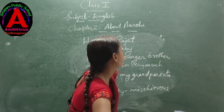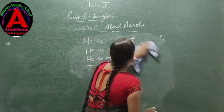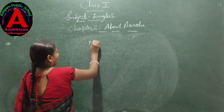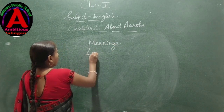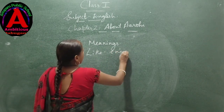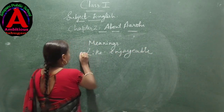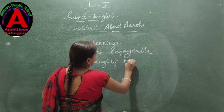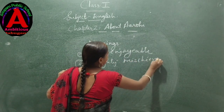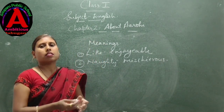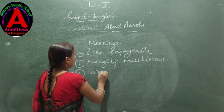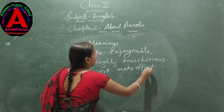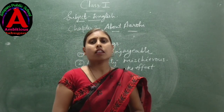Now write the meanings. You can write in a copy also — copy down these meanings. Like means enjoyable. Naughty means mischievous. And work means to make effort.